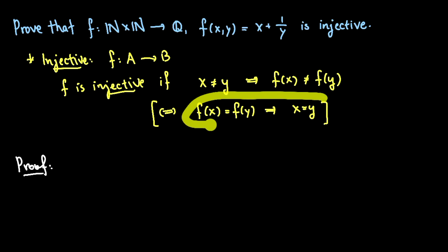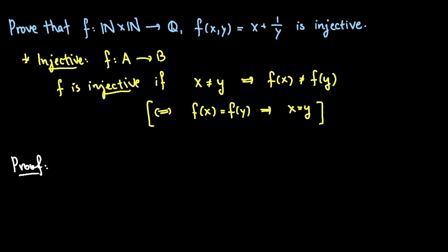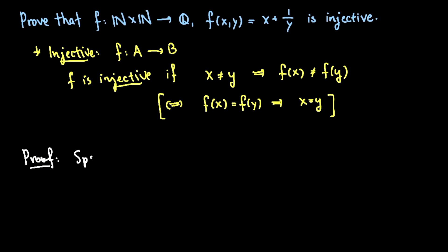Let's prove that this function f is injective. Using this contrapositive, let's suppose I have two inputs that go to the same place. So suppose that f of a comma b is equal to f of c comma d. What I want to show now is that those two inputs were the same. So a b equals c d. And remember what that means: a equals c and b equals d.